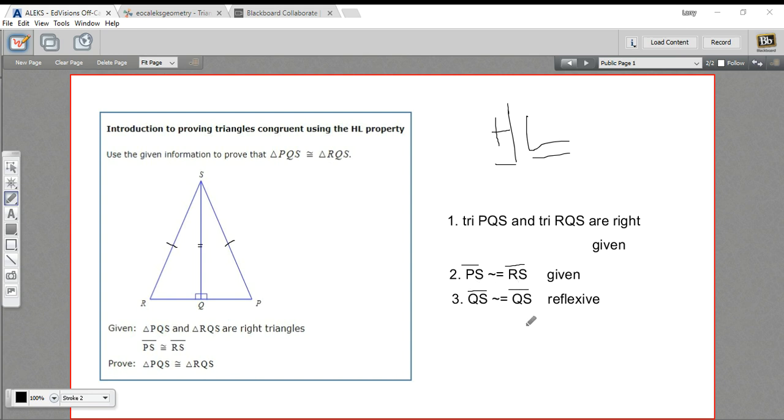All right. So now we've got the hypotenuse and the leg and the fact that these are right triangles. So we can simply state that these two triangles are congruent by the HL property. So we're going to say triangle PQS is congruent to triangle RQS. And the reason is HL property of triangle congruence.